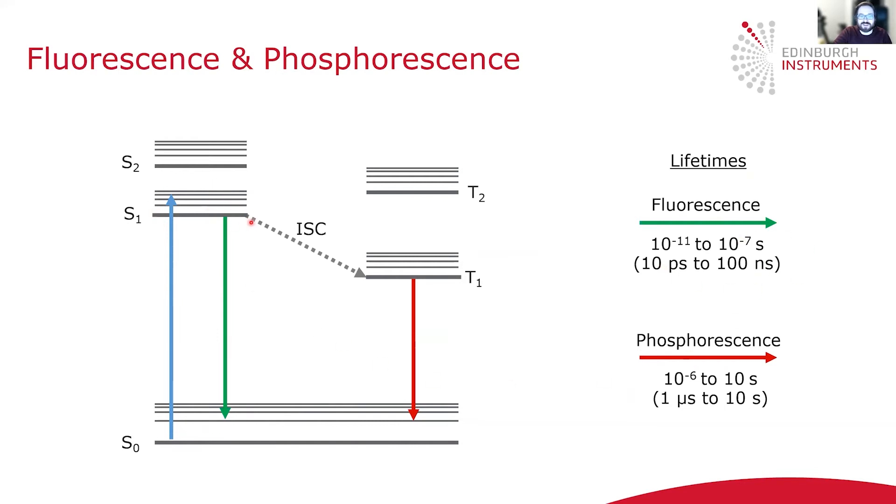Alternatively, after the molecule has been excited to the S1 state, it may undergo an intersystem crossing to the T1 triplet state. And then radiative relaxation from the triplet state to the ground state results in phosphorescence.